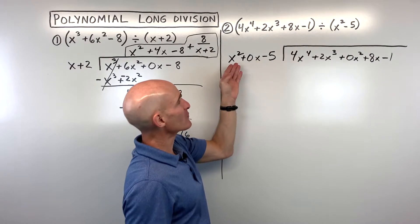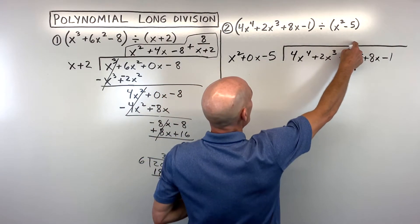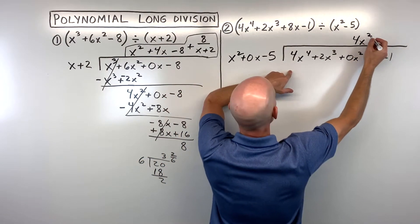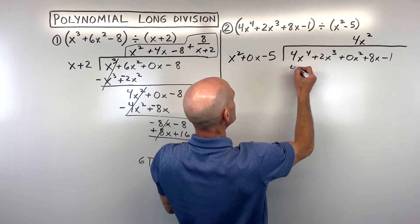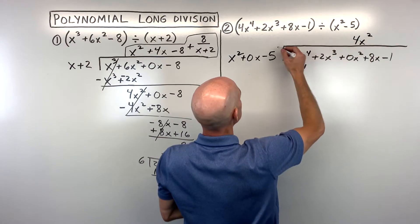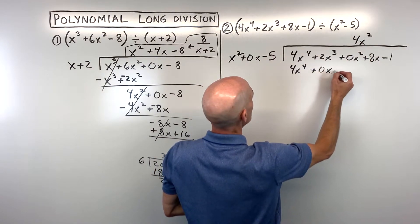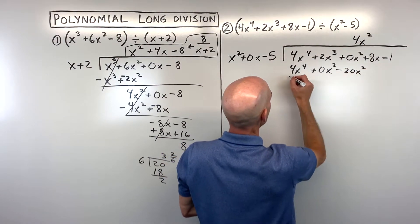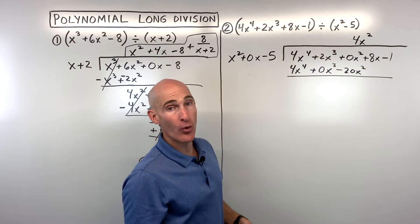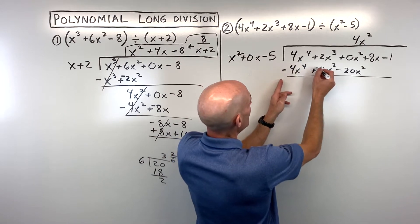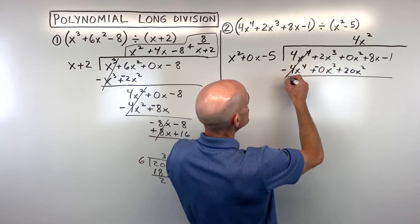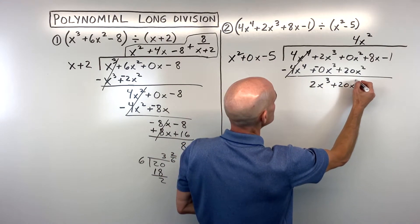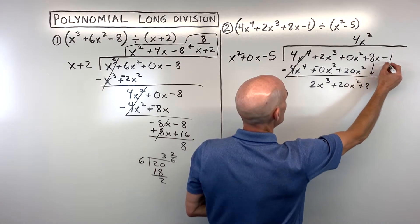How many times does x squared go into 4x to the 4th? What times x squared equals 4x to the 4th? That's going to be 4x squared. When I distribute: 4x squared times x squared is 4x to the 4th, 4x squared times 0x is 0x cubed, and 4x squared times negative 5 is negative 20x squared. We change the signs to the opposite and add, so those cancel out. Bring down the 8x and the negative 1.